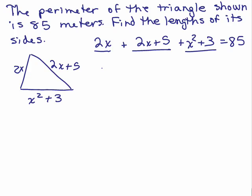So let's simplify the left-hand side. I've got x squared plus 4x plus 8 equals 85.